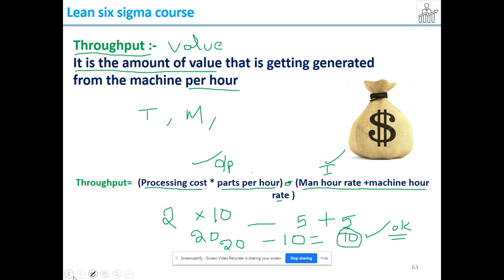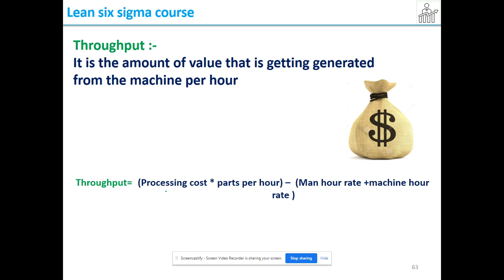Let us see one more example. My processing cost is 2 rupees, and parts per hour that the machine is producing is 10 parts. Man hour I am paying is 20 rupees.